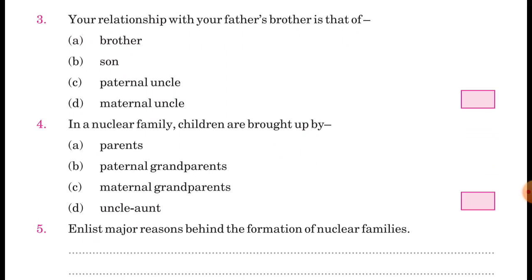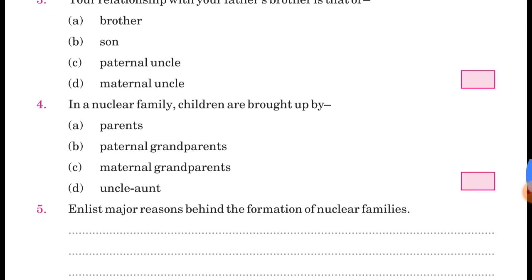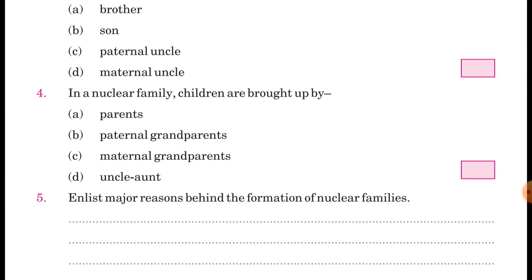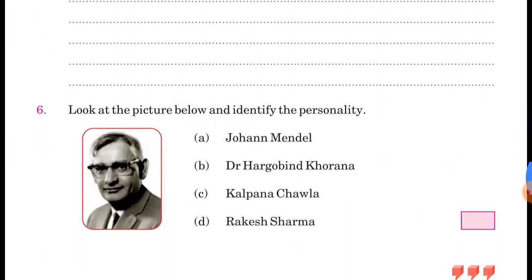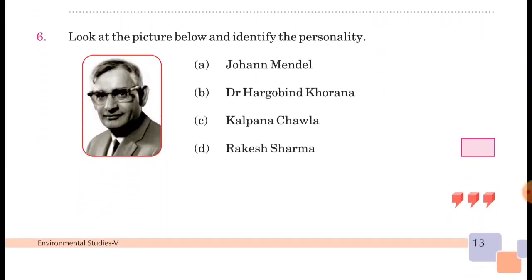Paternal Uncle मतलब चाचाजी। Question number 4: In a nuclear family, children are brought up by — एकल परिवार में बच्चों का ध्यान किनके द्वारा रखा जाता है? A. Parents, B. Paternal grandparents, C. Maternal grandparents, D. Uncle/Aunt। Nuclear family में only four members होते हैं — parents and their children — so answer is A. Parents।